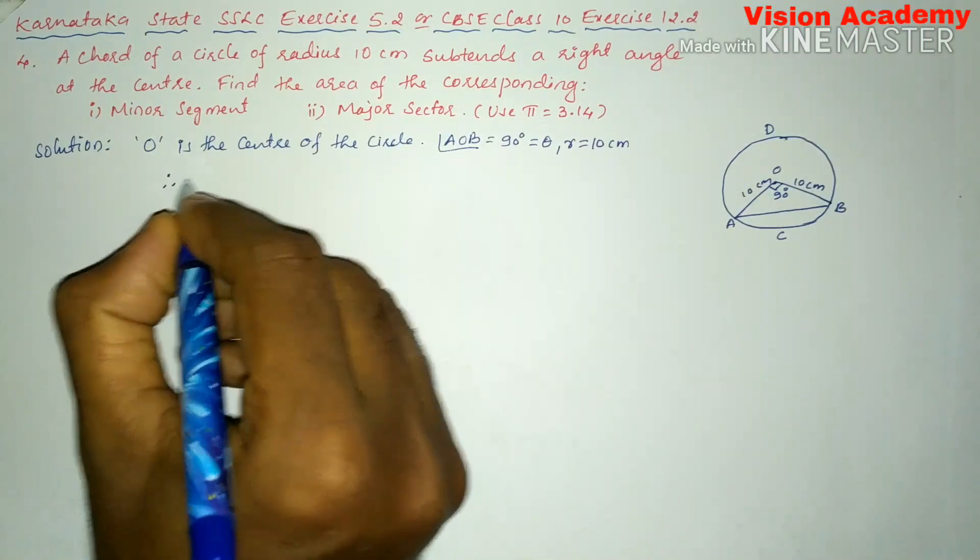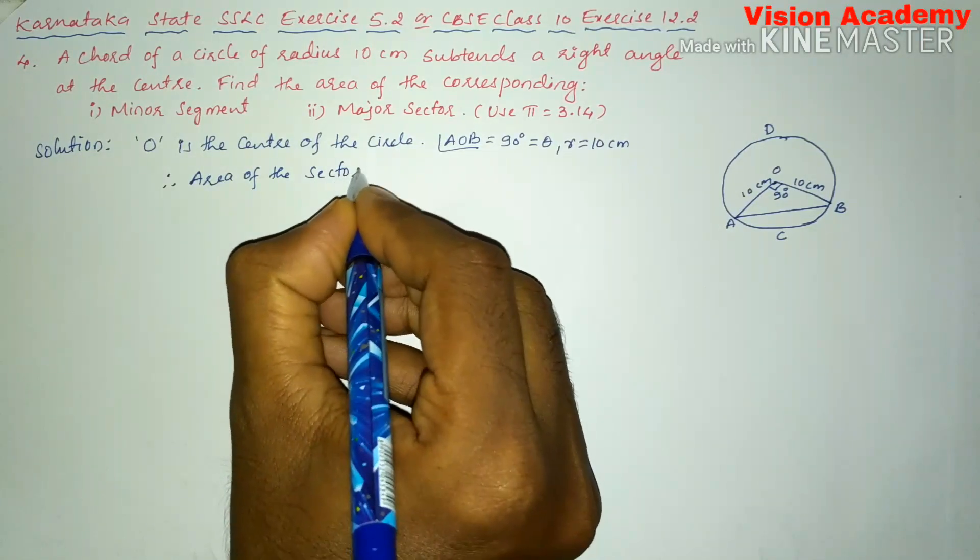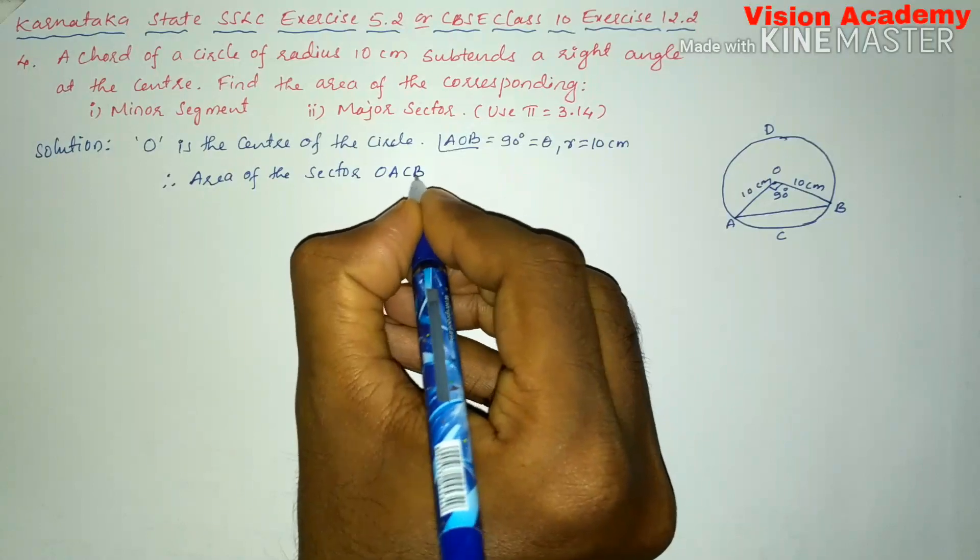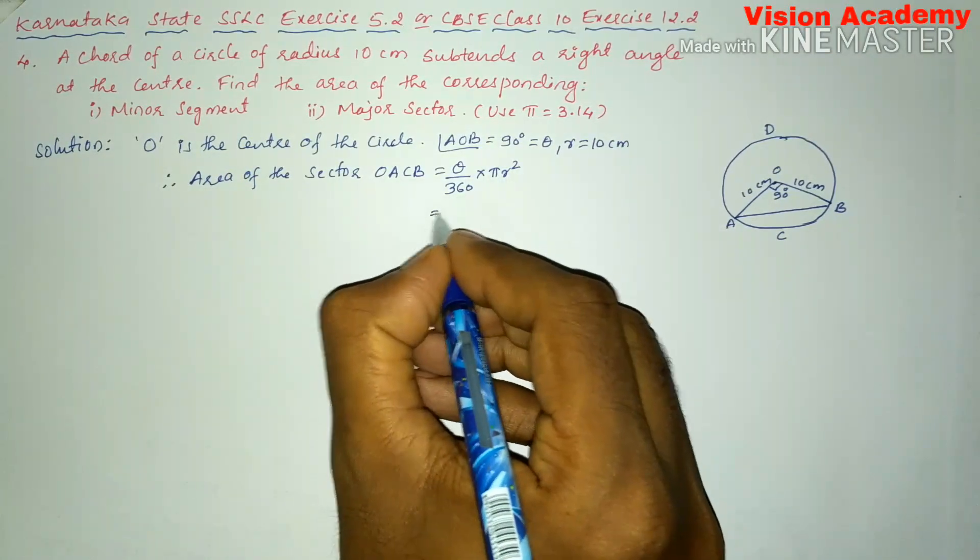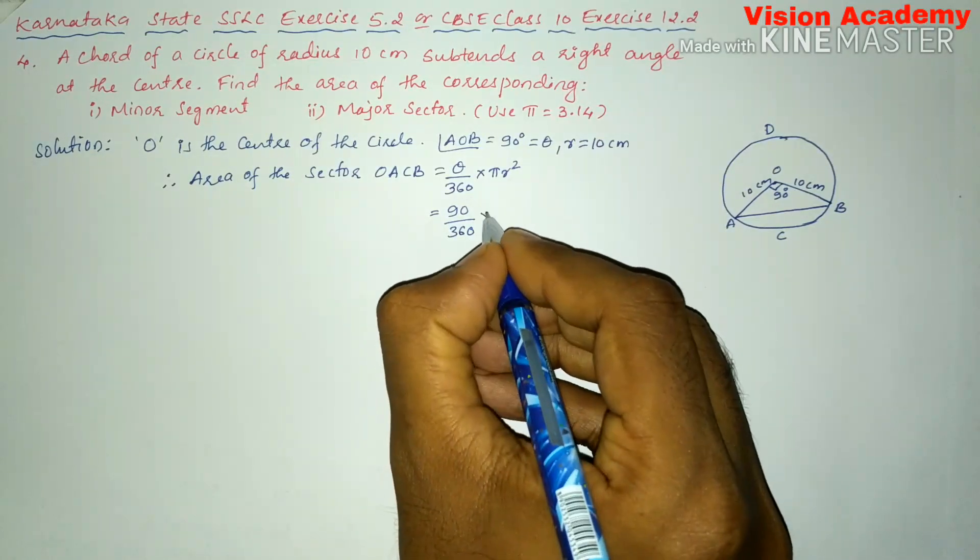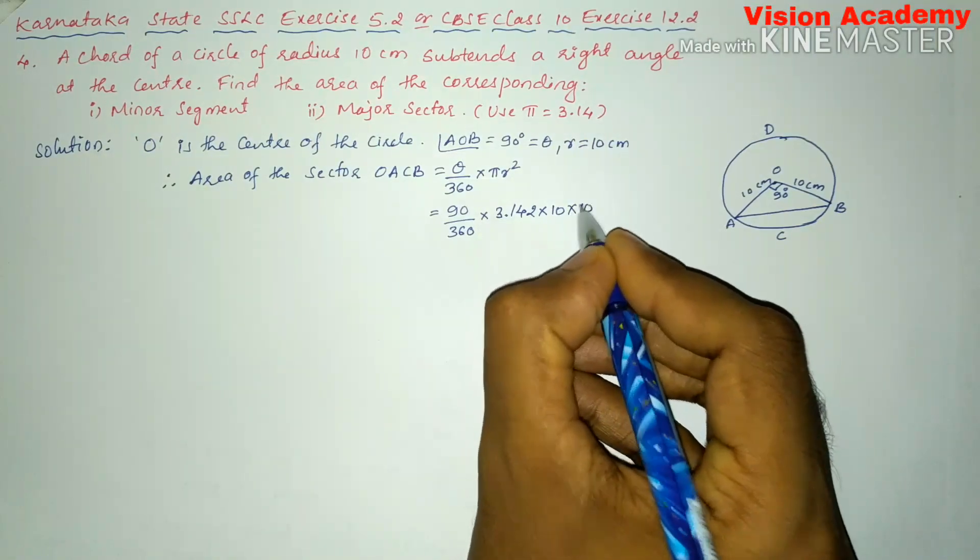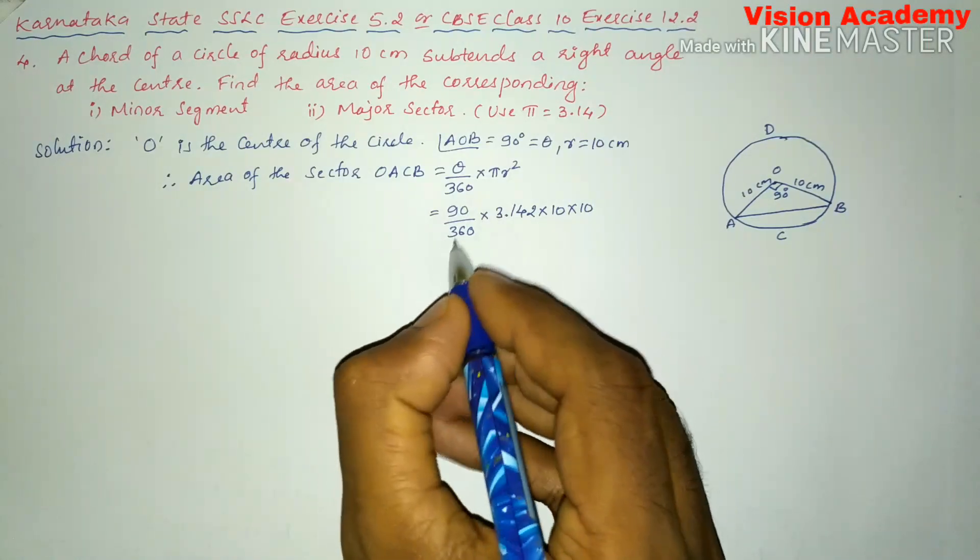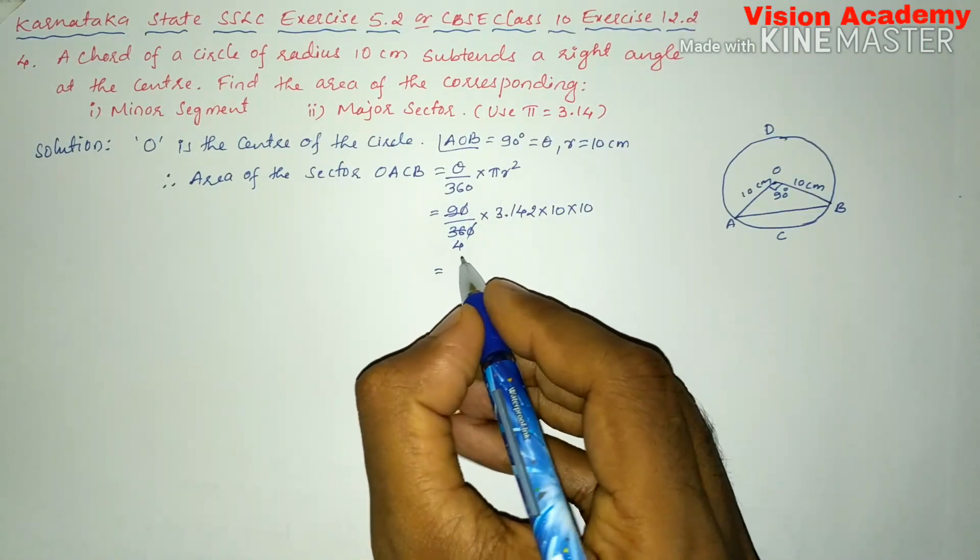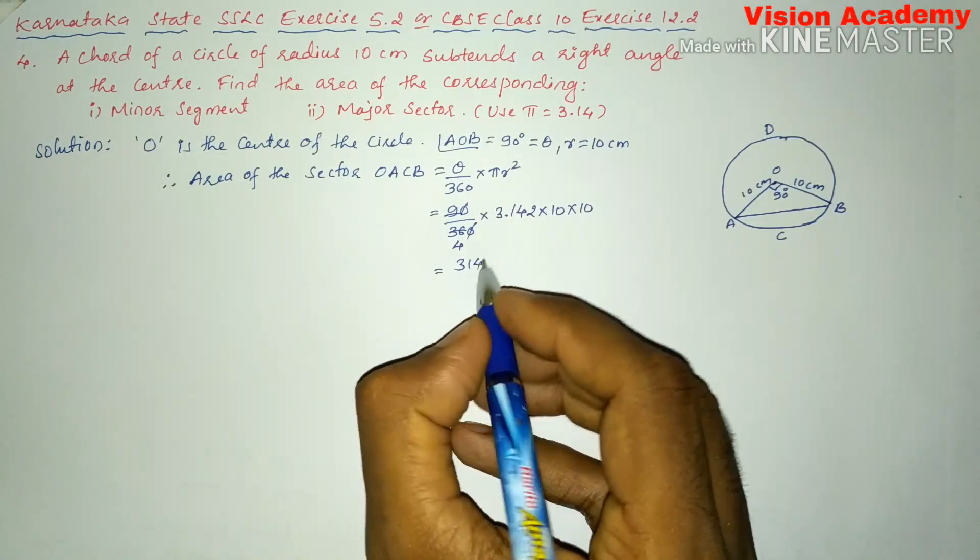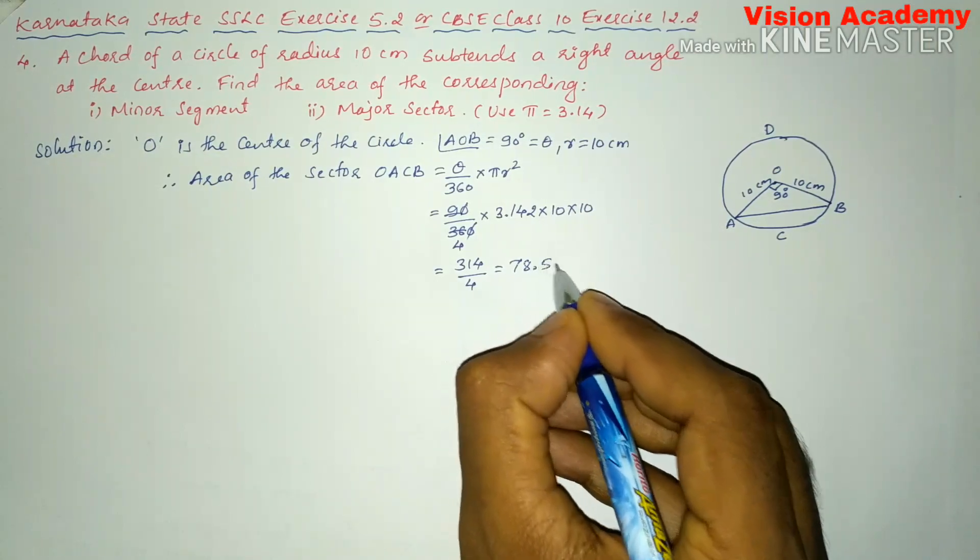Therefore, area of this sector OACB is equal to theta divided by 360 into pi r square. Here theta is 90 degrees divided by 360 into pi is 3.14 into R is 10 into 10. After simplification, we will get 314 divided by 4 which is equal to 78.5 centimeter square.